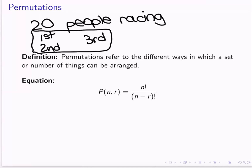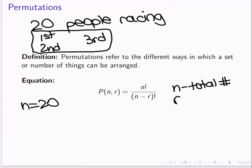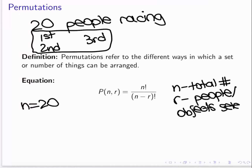The equation is P(N, R) equals N factorial over N minus R factorial, where N is the total number of people or objects that could be selected — in this example, N would be 20 — and R is the number of people who actually are selected, in this case winning first, second, and third prize. So R would be 3, because we only care about the top three. Regardless of who got fourth through twentieth, we don't care. Whereas if we cared about the exact order of all 20 people, that would just be 20 factorial.